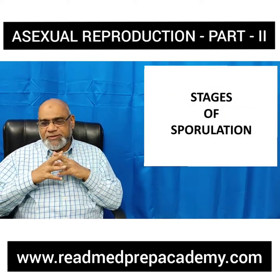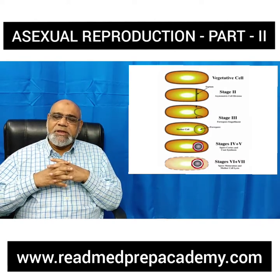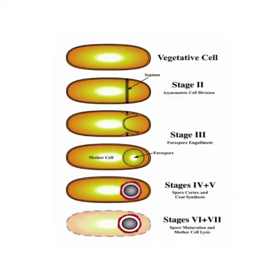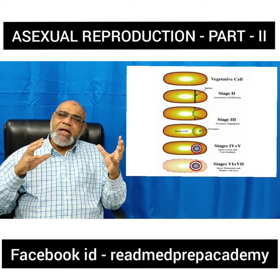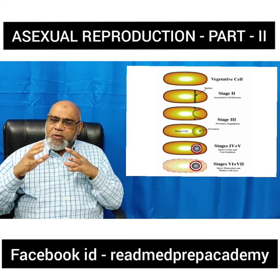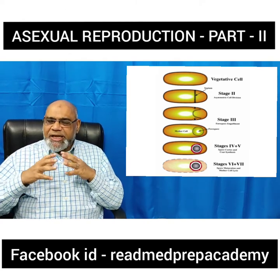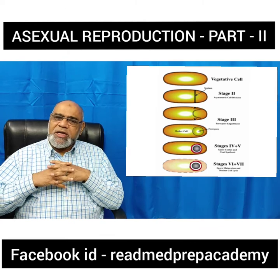What are the different stages of sporulation? Initially, the vegetative cell undergoes condensation of the cytoplasm at one side and an unequal cell division — that is stage 2. The forespore is formed, and this forespore slowly becomes the endospore by developing a three-layered wall around it. The forespore gets separated from the parent body, and this endospore is released only when the parent body disintegrates. There are totally seven stages in the formation of an endospore. This is seen in bacteria.